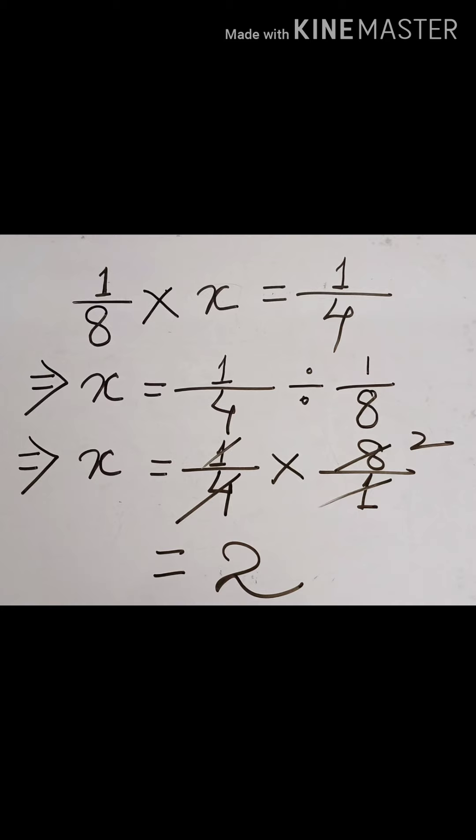Division means you multiply by the reciprocal of the divisor. So one eighth becomes eight by one. Therefore one fourth divided by one eighth equals one fourth multiplied by eight, which gives us two. This portion should be cut into two equal slices.